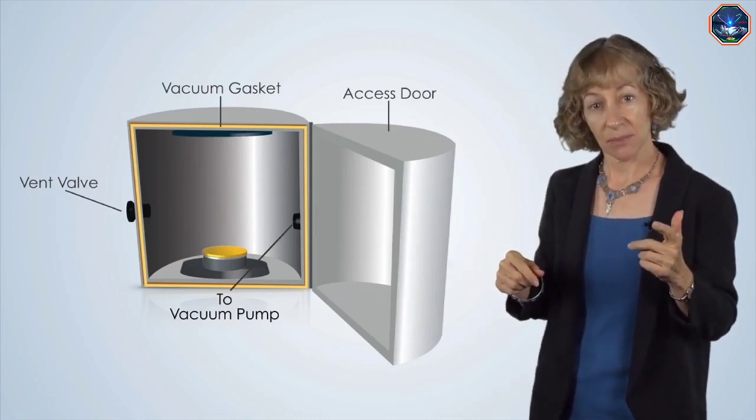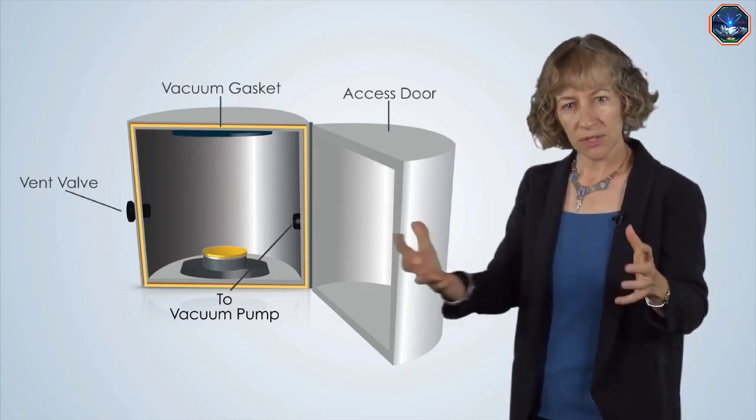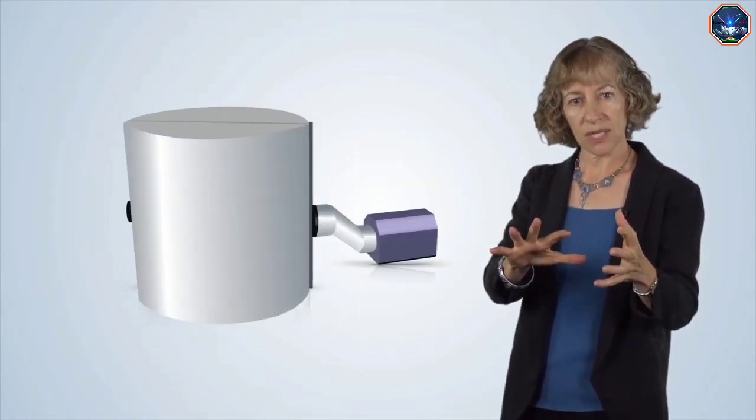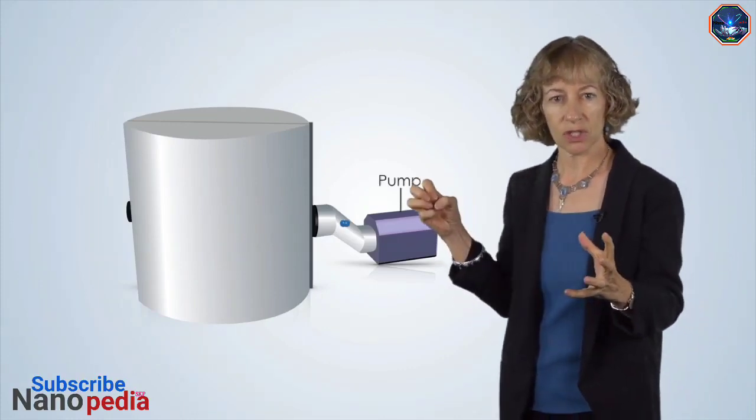There are many types of gasket materials, but a common material is vacuum compatible rubber. Once the door is closed and the chamber is sealed, then we can use a vacuum pump to remove the air from the chamber.